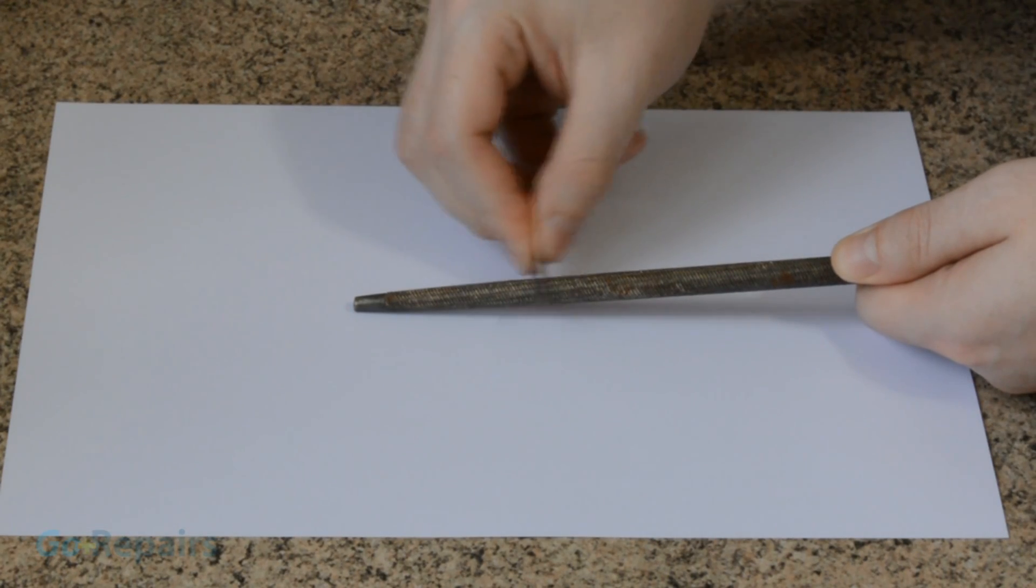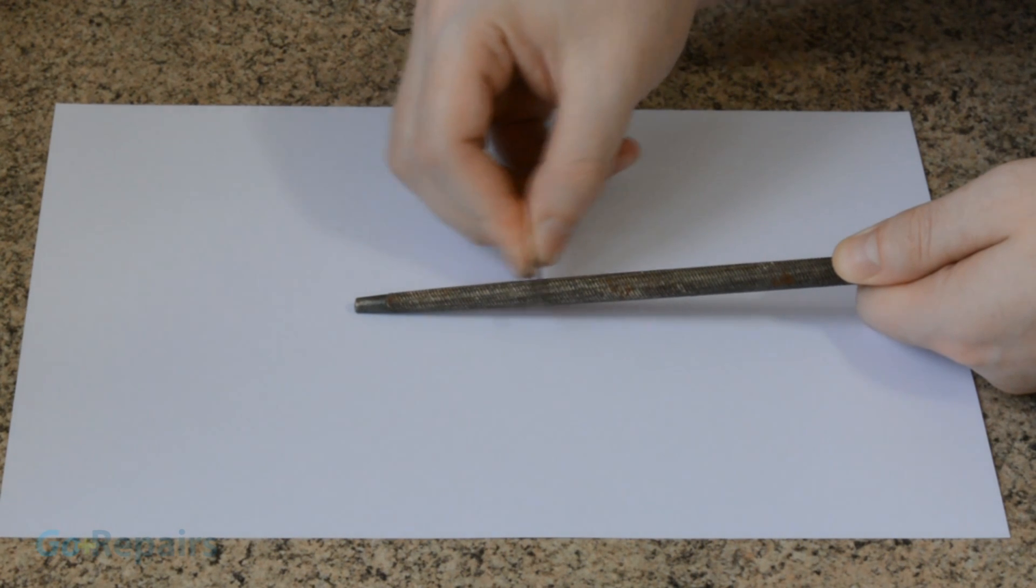You can make your own iron filings by filing down a spare iron nail. Don't forget to put a piece of paper down to catch the filings as they drop and to help you see them.